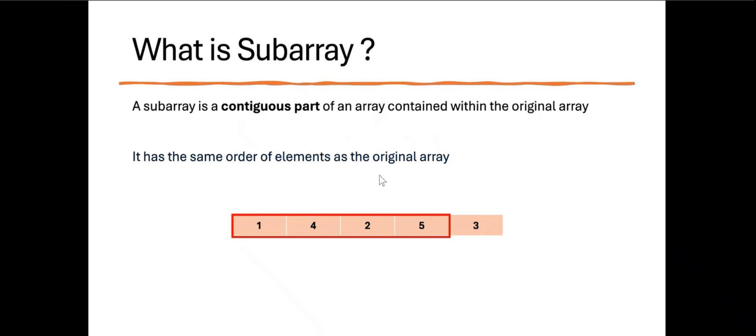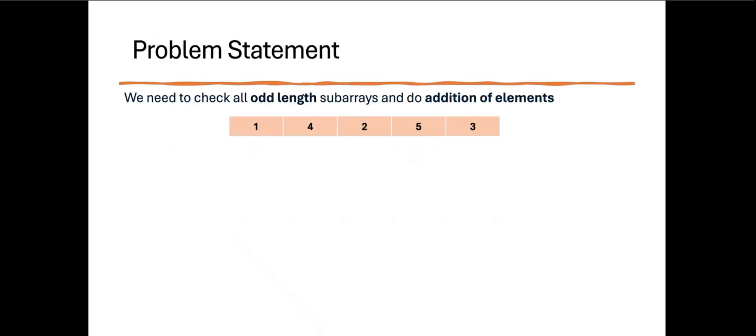The order of elements is the same as the original array, and the original array itself is a subarray because it is a contiguous part of the array. Now let's understand the problem statement: we need to check all odd length subarrays, do the addition of elements in each subarray, and return the total. Odd length means the number of elements in that subarray should not be divisible by 2.